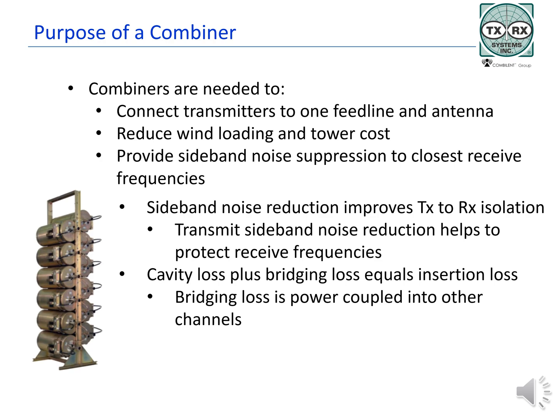All amplifiers produce noise, which is added to the signal. The combiner reduces transmitter noise and protects received frequencies from that noise. Several factors are used to measure signal loss in a combiner: cavity loss, cable loss, and bridging loss. Cavity loss is how much of the signal is reduced as it travels through a cavity. Bridging loss is how much energy is coupled or bridged into adjacent channels. By adding cavity loss to bridging loss, design engineers calculate the insertion loss of each channel going through the combiner.